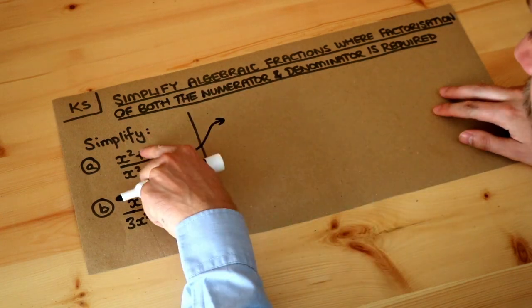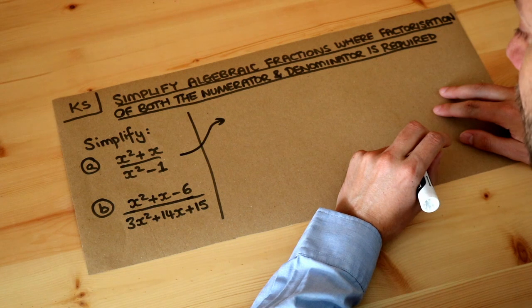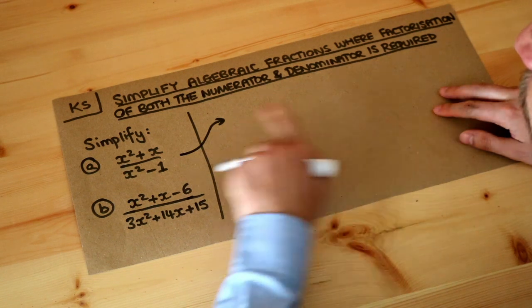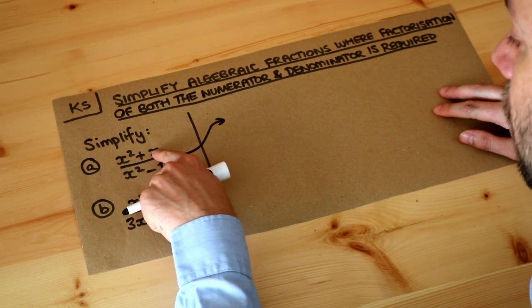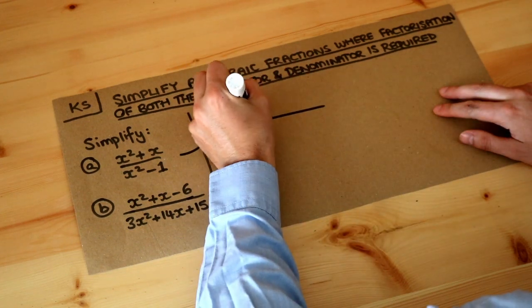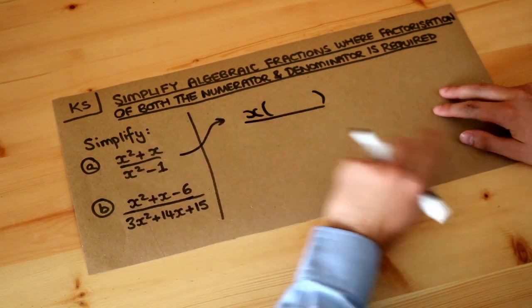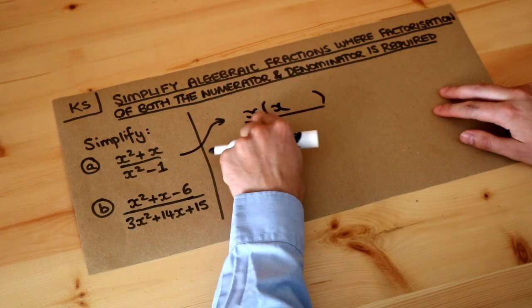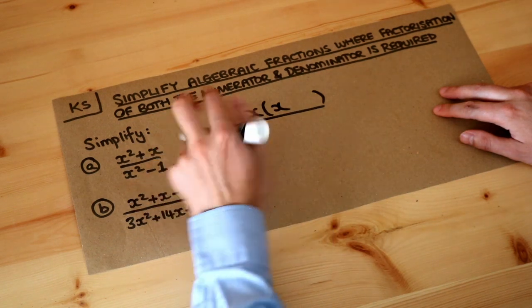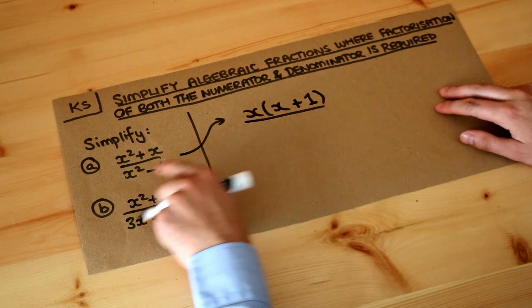So in this video we're going to have to factorize both the numerator and the denominator. So x squared plus x, how do we factorize that? Well, can you see that they have a common factor of x, and when that happens we take that common factor of x and then put a single bracket after it and think, well, x times what is x squared? Well it's x. And x times what is x? Well it's 1, so you have plus 1 and that's factorization.